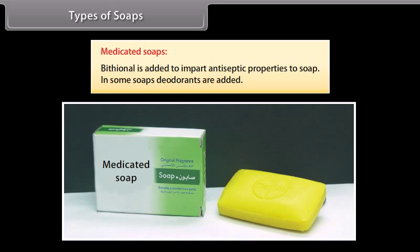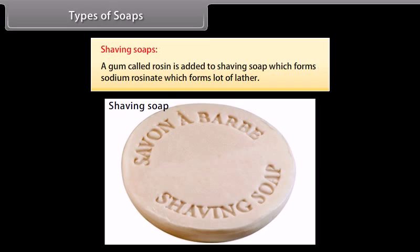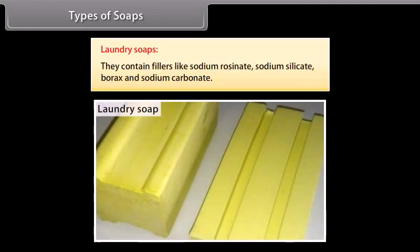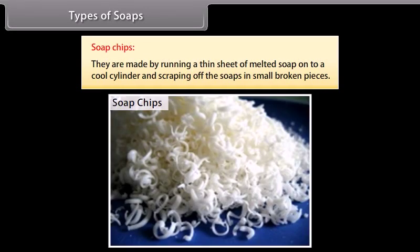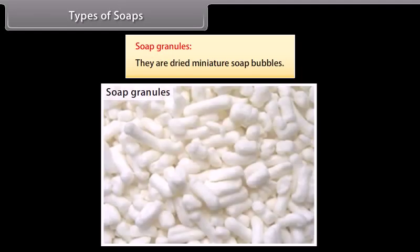Medicated soaps: bithionol is added to impart antiseptic properties; some soaps also contain deodorants. Shaving soaps: a gum called rosin is added which forms sodium rosinate, producing a lot of lather, and glycerol is added to prevent drying. Laundry soaps contain fillers like sodium rosinate, sodium silicate, borax, and sodium carbonate. Soap chips are made by running a thin sheet of melted soap onto a cool cylinder and scraping off small broken pieces. Soap granules are dried miniature soap bubbles.